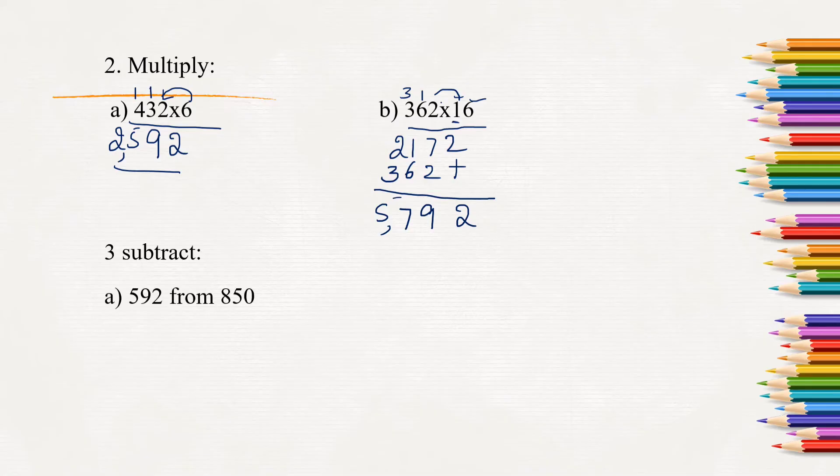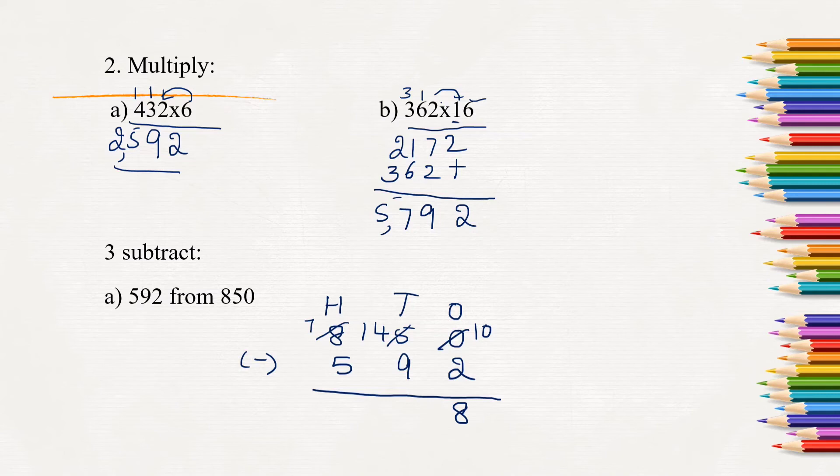Next question: subtract 592 from 850. From 850 we have to take away 592. Remember, from smaller number we cannot take away the greater number. From greater number only we can take away the smaller number. We will write 850 first as it is the greater number. Next is 592. Here from 0 we cannot take away 2, so we will have to borrow from tens value. 5 becomes 4 here and 0 becomes 10. 10 minus 2 will be 8. Again, from 4 we cannot take away 9, so we borrow from 8. 8 becomes 7 and 4 becomes 14. 14 minus 9 will be 5. 7 minus 5 is 2. So the difference of 850 minus 592 is 258.